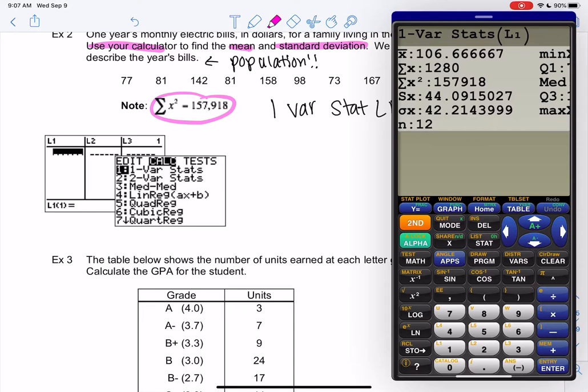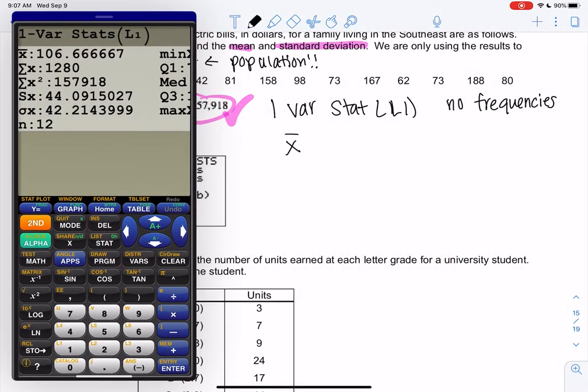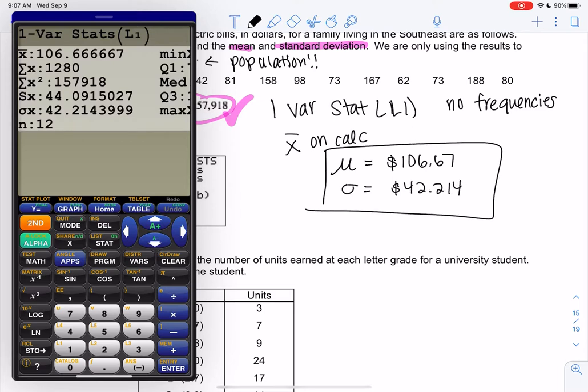So x̄ is the mean, but since we're using a population, we're going to use the μ symbol instead. So the average would be $106.67, since it's a bill I might as well put the dollar sign. And then we're going to use σ this time because it's a population, so 42.214. And that's my mean and standard deviation. S would be incorrect because it's not a sample.